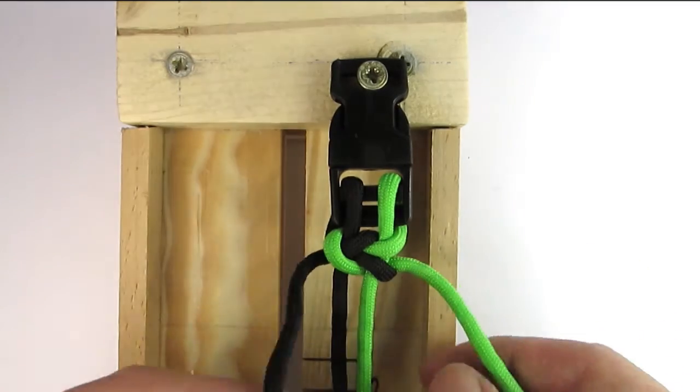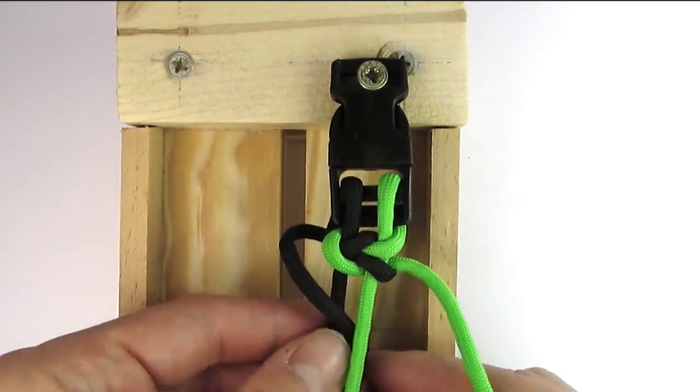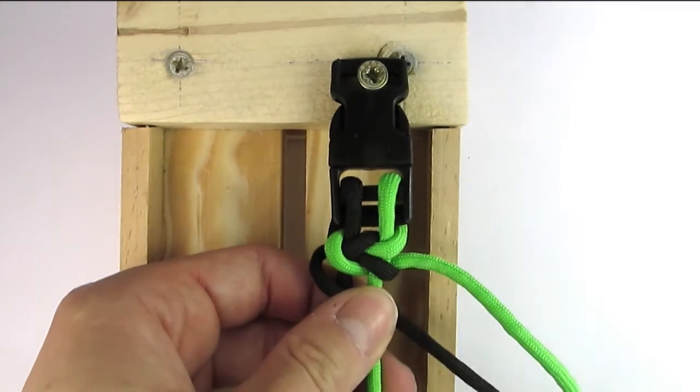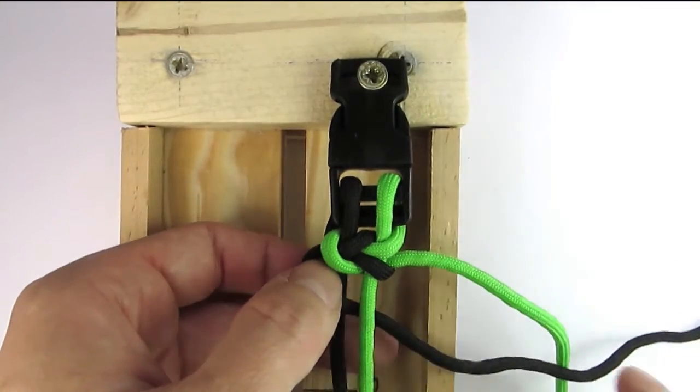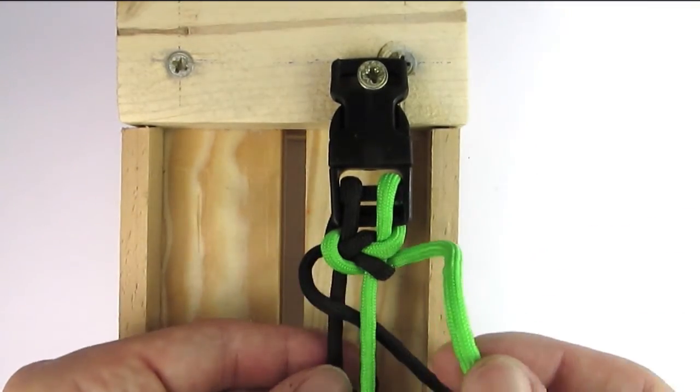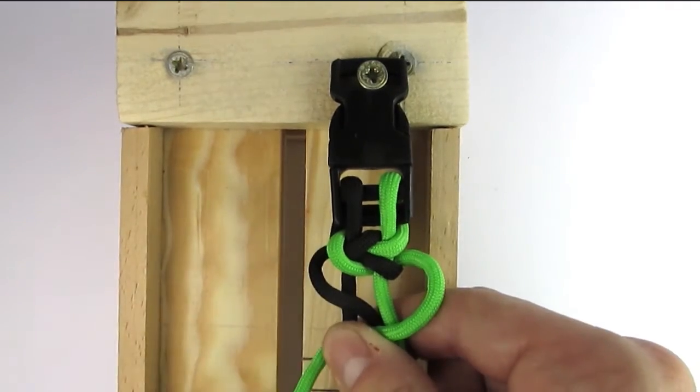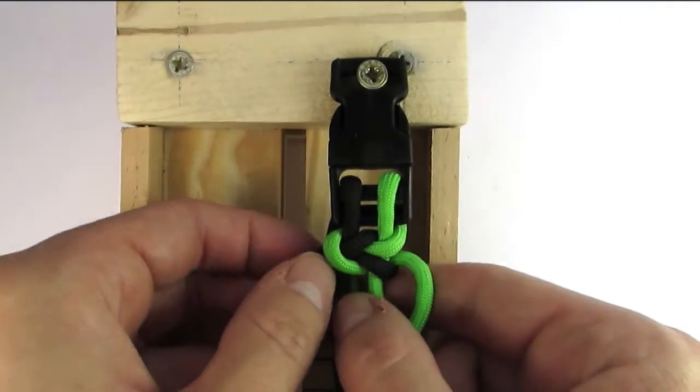We continue with the same sequence again, feeding the first color through the middle, and then the second color, and finally feed it through the loop that was made by the first cord.